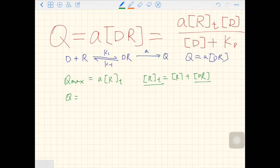Q equals Q max times D over D plus KD. In the previous video, we also talked about the concept of EC50. If you can remember, EC50 is the concentration you need to achieve 50% of Q max.